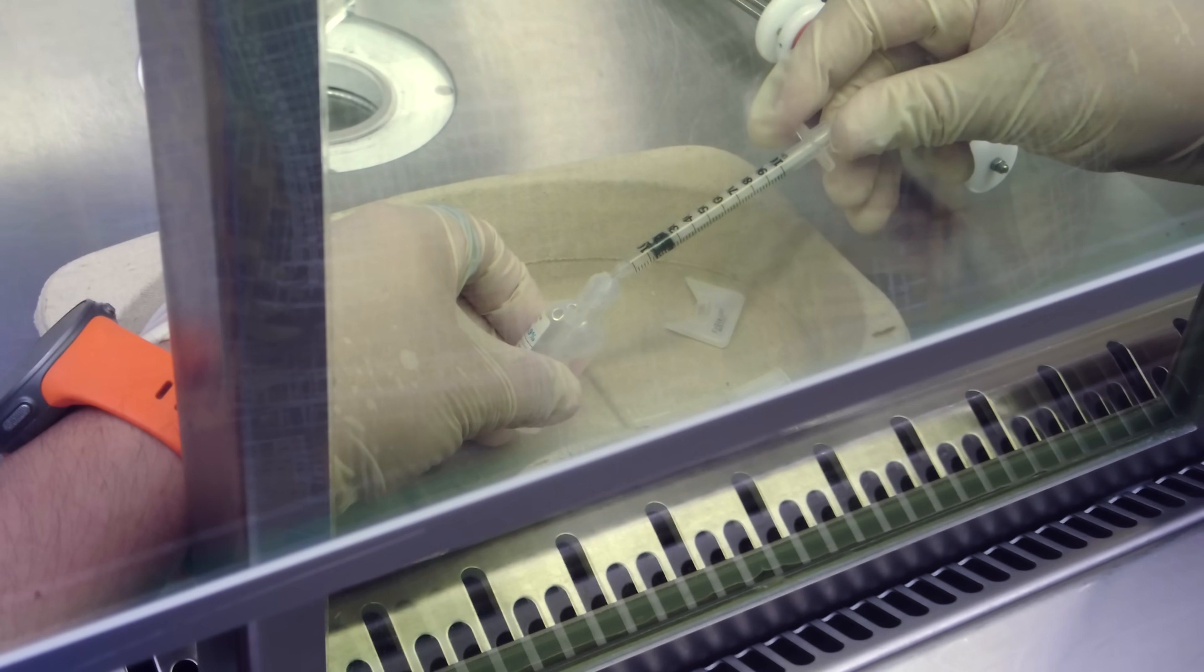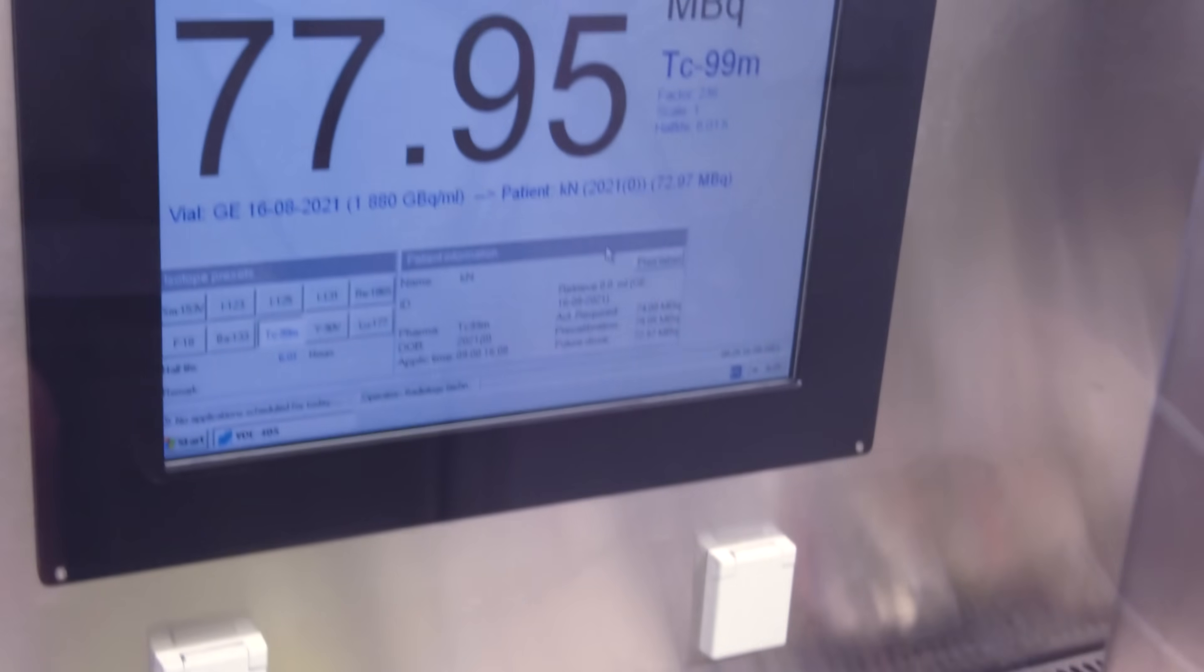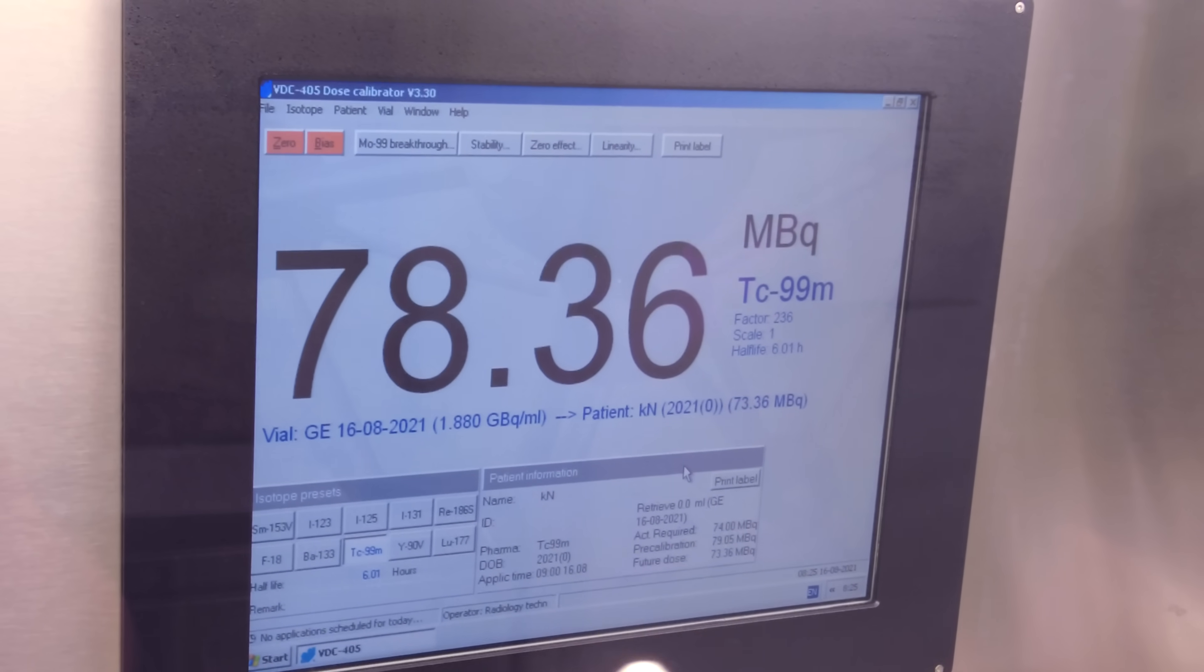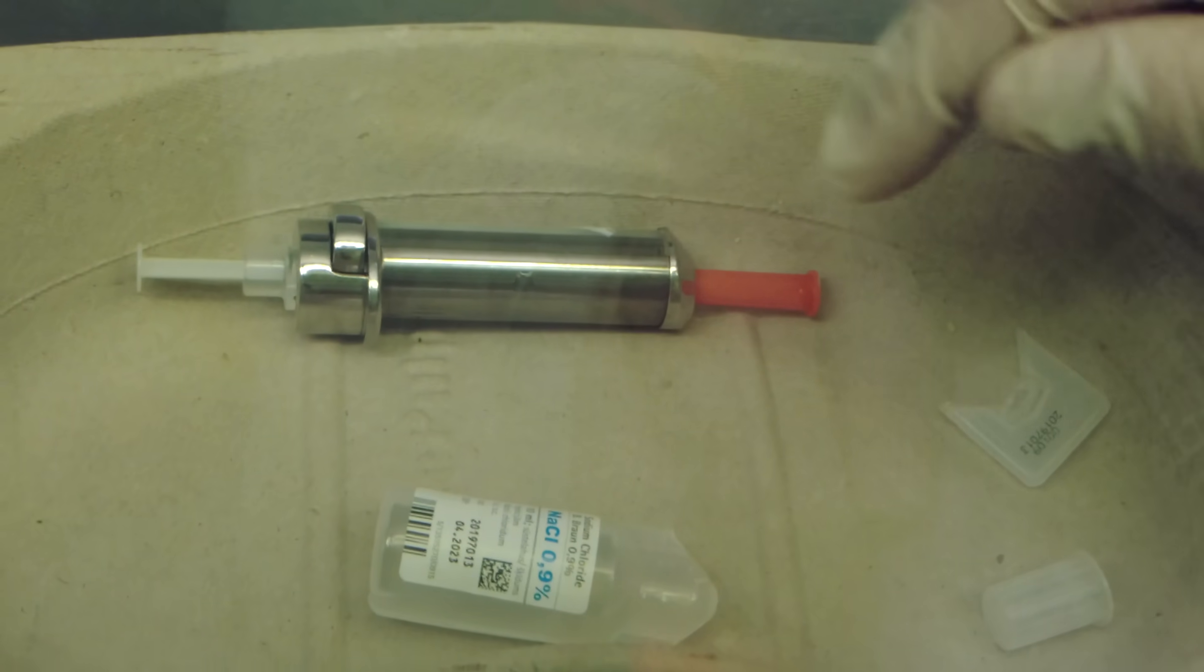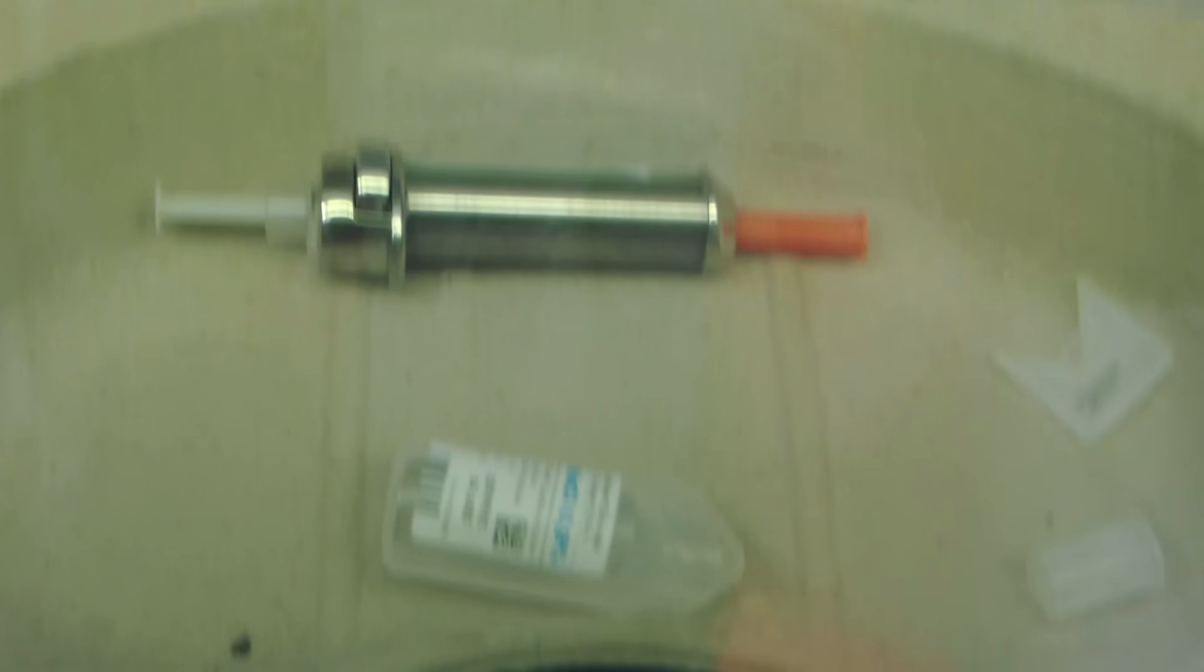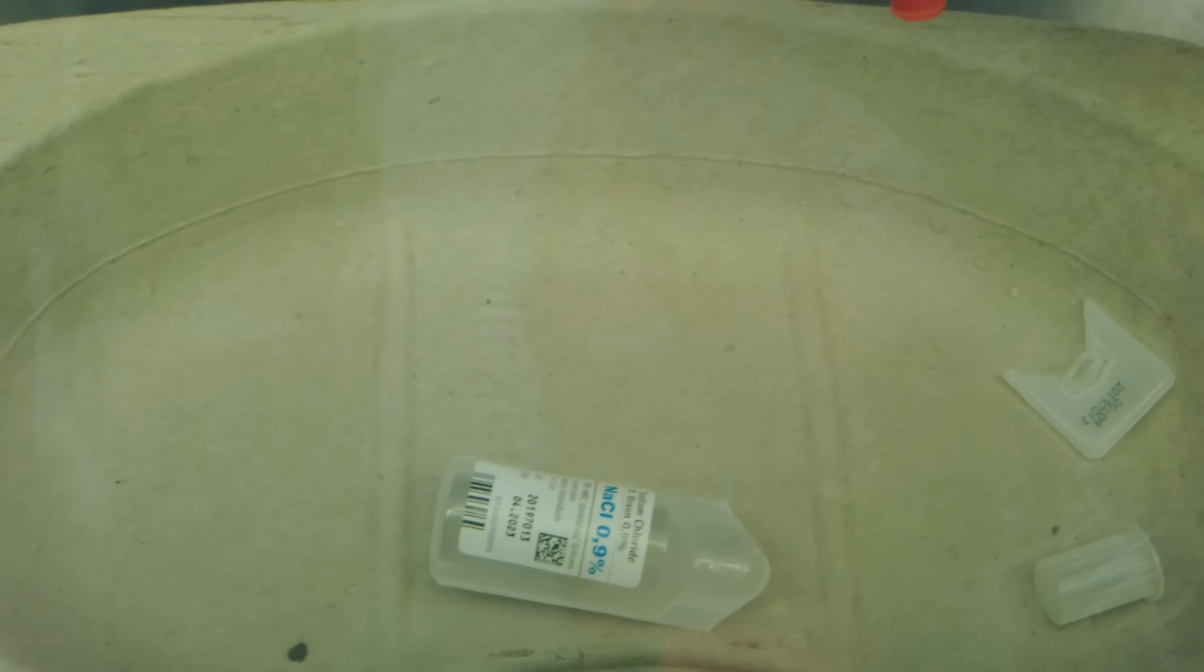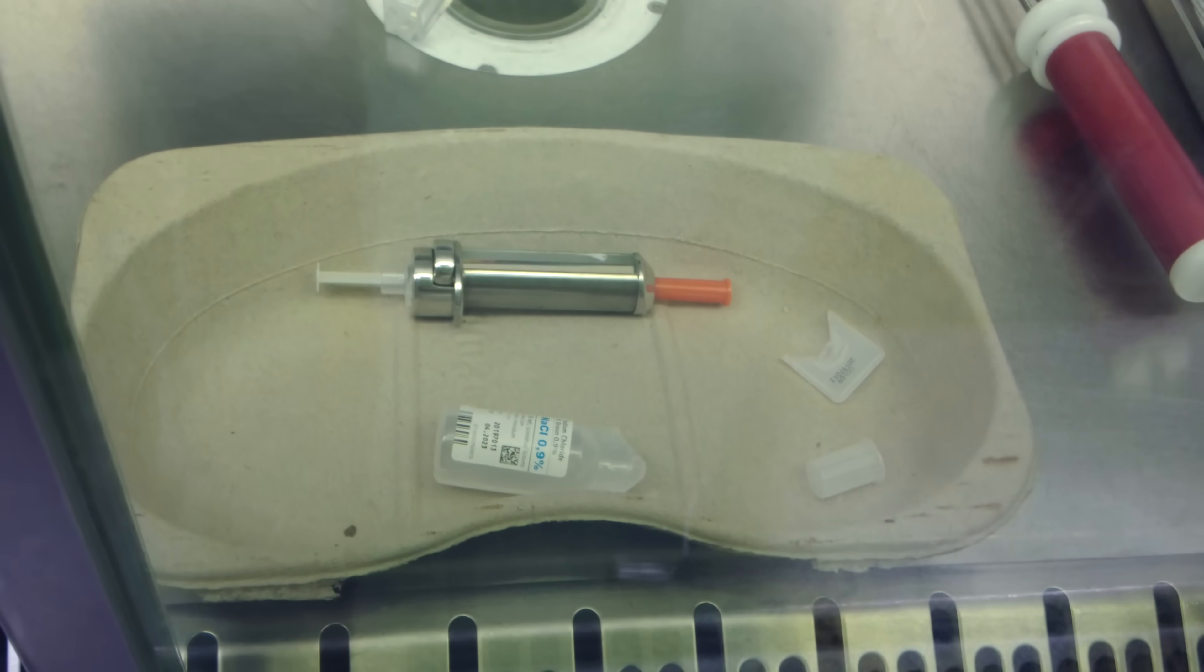After diluting technetium, the medical worker checks radioactivity of the injected solution to make sure the patient is not exposed to excessive radiation. As a precaution, even the syringe has a tungsten case.